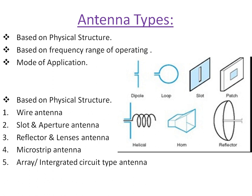Here we will go through briefly the different types of antenna based on their physical structure. I have made this video as a brief introduction to antenna types — if you want any antenna in detail, please let me know. In the next video I will go through the microstrip antenna in detail as per the university syllabus. Based on physical structure, we have: wire antenna, slot aperture antenna, reflector antenna, microstrip antenna, and array or integrated circuit type antennas.